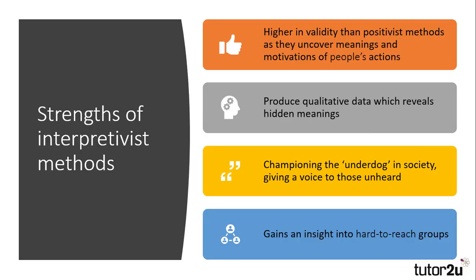Interpretivist methods have certain strengths. They are higher in validity than positivist methods as they probe deeper than the surface of social facts that positivists prefer. They uncover the meanings and motivations of people's actions, whether this is observed verbally or in writing. They produce qualitative data which helps researchers to uncover hidden meanings they may not have understood. Typically, researchers are more likely to come from middle-class backgrounds, and by utilising qualitative data, they have the ability to understand the views of those outside of their social class or ethnic group.